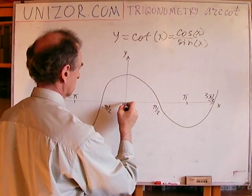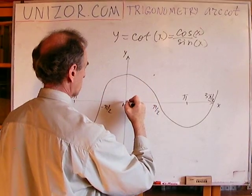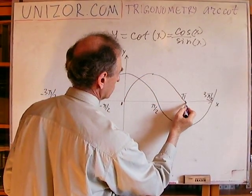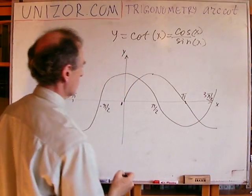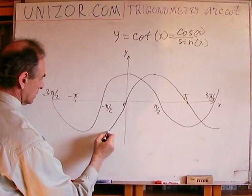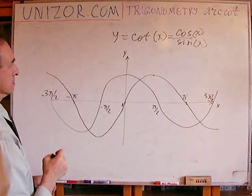Now, sine starts with 0 and goes to the maximum of 1 here, and then goes down, and then goes to minus 1. Here, whenever it's 0, and it goes to 0, and the plus. So, that's the sine.